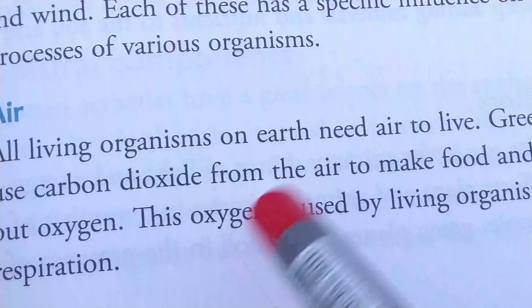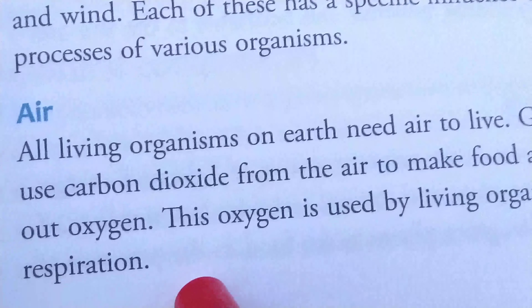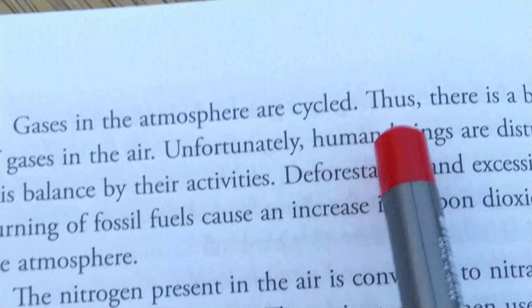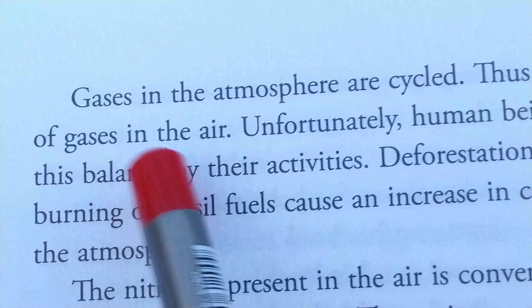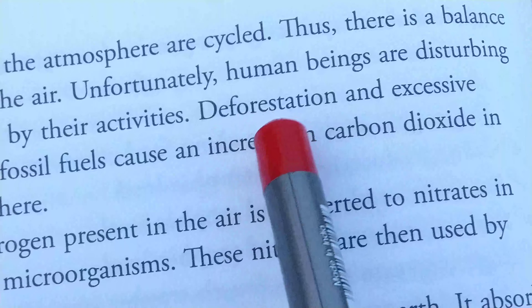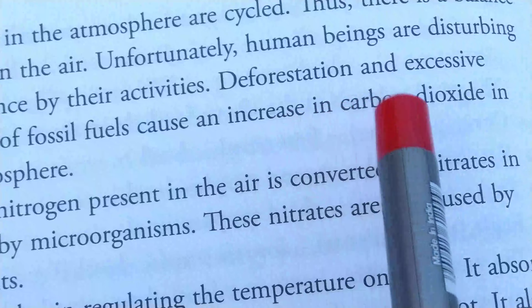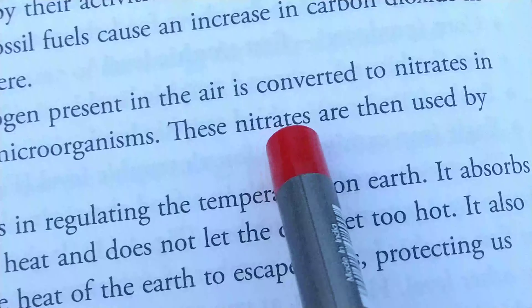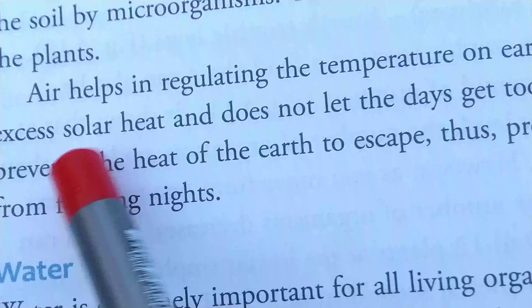Next, abiotic components: non-living things in the environment are called abiotic components. Abiotic components include air, water, soil and climatic factors. These are non-living substances which are essential for maintaining the ecosystem, such as air, water, soil and climatic factors such as sunlight, temperature, humidity and wind. Each of these has a specific influence on the life processes of various organisms. All living organisms on earth need air to live. Green plants use carbon dioxide from air to make food and give out oxygen, which is used by living organisms for respiration.